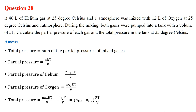We start on equation 38, number i. 46 liters of helium gas at 25 degrees Celsius and 1 atmosphere was mixed with 12 liters of oxygen at 25 degrees Celsius and 1 atmosphere. During the mixing, both gases were pumped into a tank with a volume of 5 liters. They have compressed the two gases together into a 5-liter container.